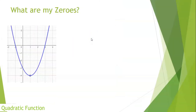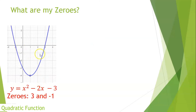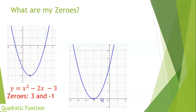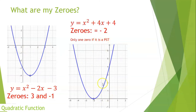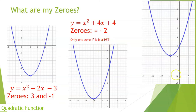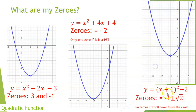Given graphs, the zeros are at x = 3 and x = −1 for the first, and x = −2 for the second. Note: if the graph touches the x-axis at one point, it is a perfect square trinomial. If it never touches the x-axis, the roots are imaginary.